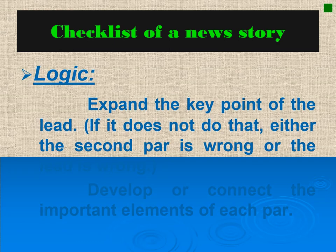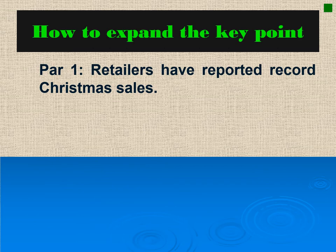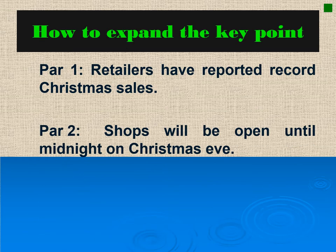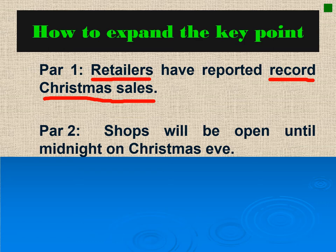How do we do this? Let's look at these two paragraphs. Paragraph 1: Retailers have reported record Christmas sales. Paragraph 2: Shops will be open until midnight on Christmas Eve. As I said, you have to look at the key points or key elements in the first paragraph and make sure that these elements are connected to the second paragraph. The key points or keywords in paragraph 1 are 'retailers' and 'record Christmas sales.'